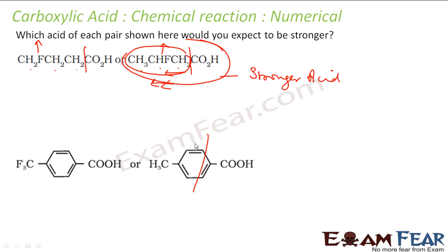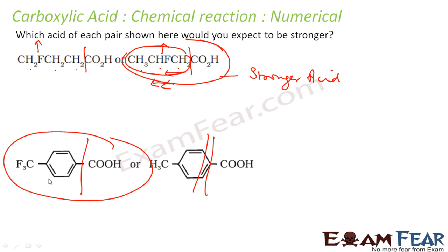In this case, instead of CH3 we have (CH3)2CH — isopropyl. The isopropyl group releases electrons more (greater +I effect), so it makes the acid stronger in the opposite direction. Actually, the compound with isopropyl has more electron-releasing character, making it less acidic.